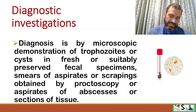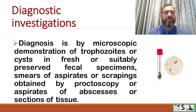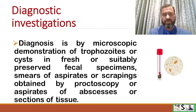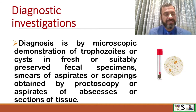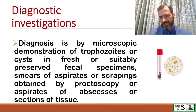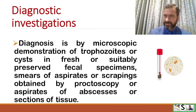What diagnostic investigations are made? The diagnosis of amoebiasis is made by microscopic demonstration of trophozoites or cysts in fresh or suitably preserved fecal specimens. Stool examination is done, as well as examination of smears of aspirates and scrapings obtained from proctoscopy, or aspirates of the abscess or suction of tissue. By these methods we can diagnose amoebiasis.